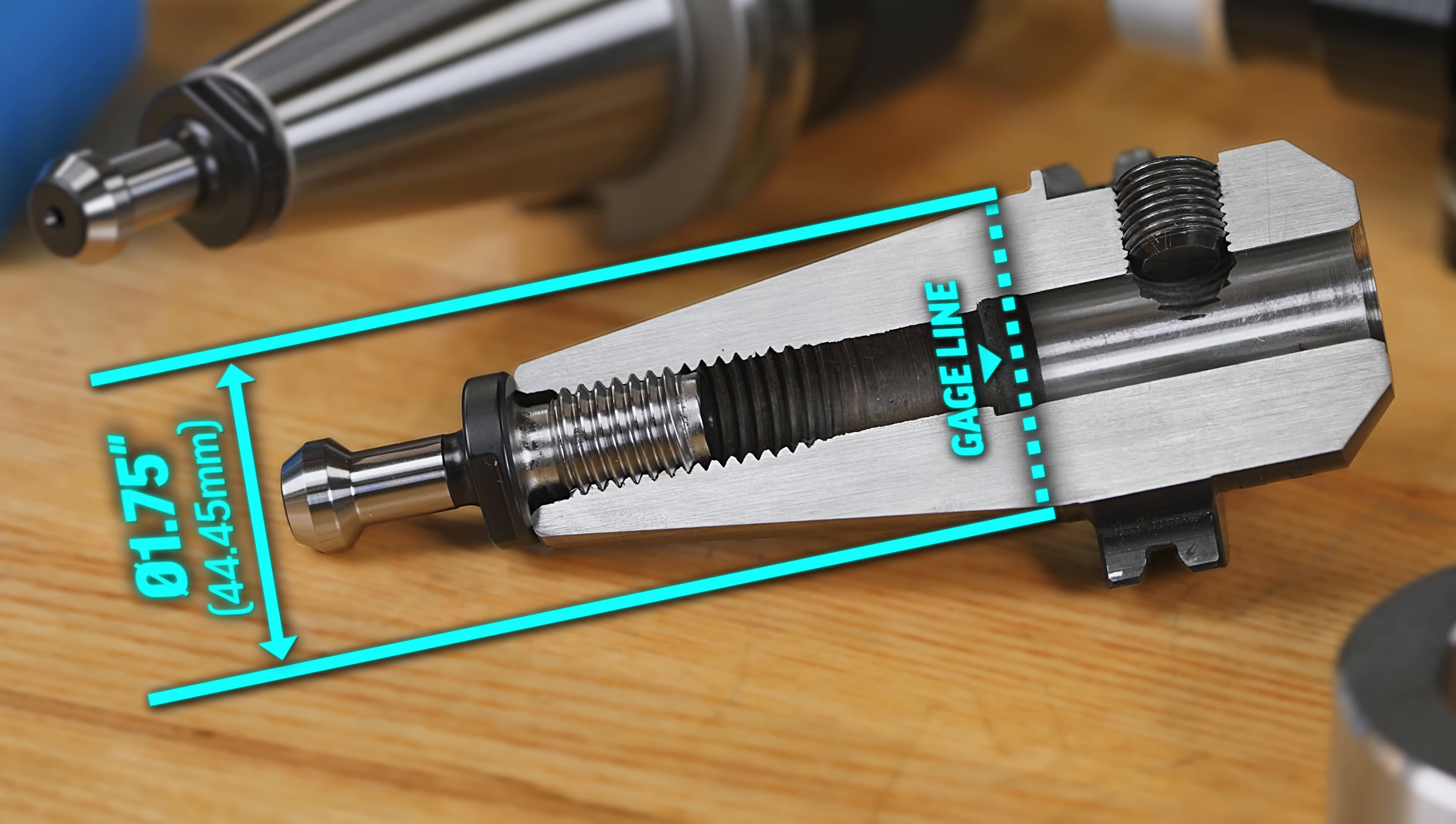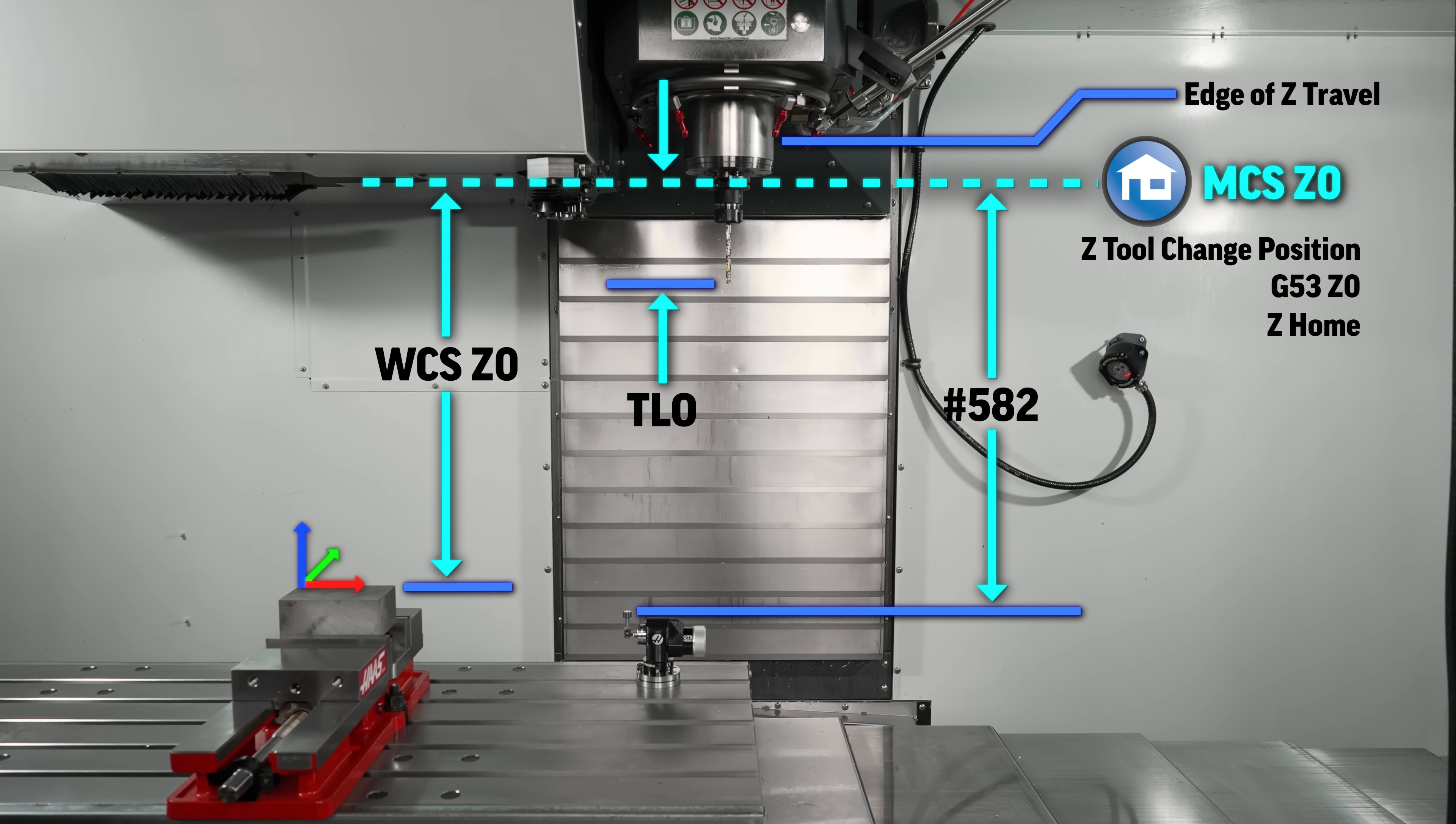Now for a CT40 or SK40 holder, this gauge line rests at a spot where the taper is exactly 1.75 inch, 44.45 millimeters in diameter. Now this gauge line serves as a starting point or datum for all of our other probe measurements.